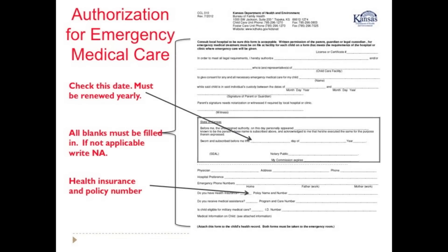Here is a copy of the Authorization for Emergency Medical Care form. All blanks must be filled in; if not applicable, write in N/A. Be sure to include the Health Insurance and Policy number, and check the date because this form must be renewed yearly.